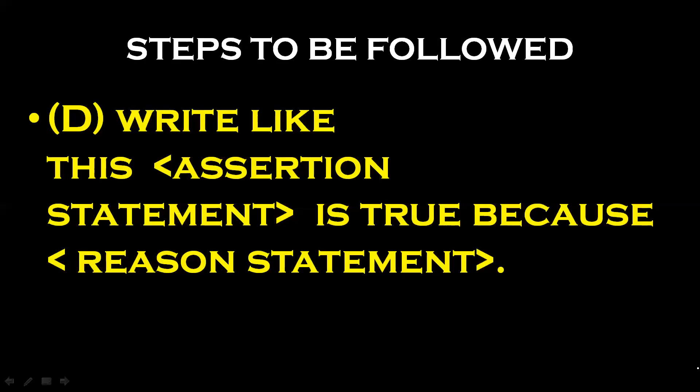For example: the magnification produced by a plane mirror is always plus one. The reason given is that a plane mirror always forms virtual images of the same size. These two sentences are technically correct. The reason — plane mirror always forms virtual images of the same size — correctly explains why magnification produced by a plane mirror is always plus one.